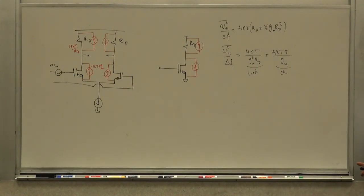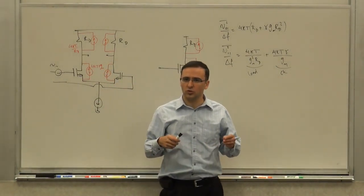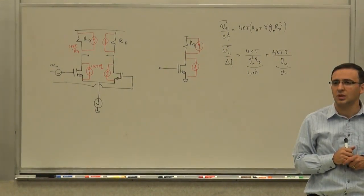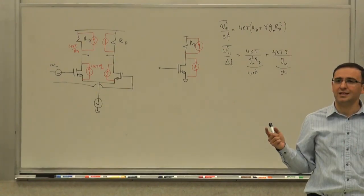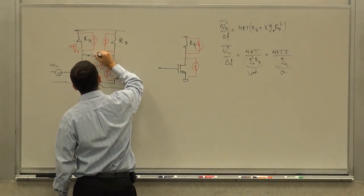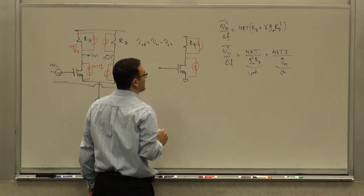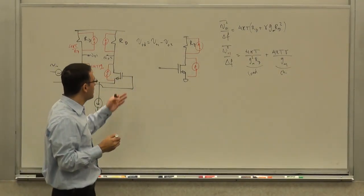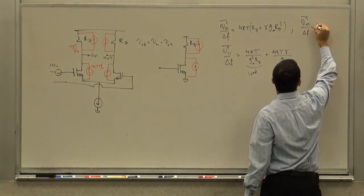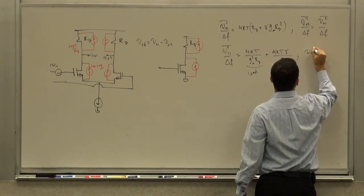Now, what about the differential amplifier? The differential output is V_01 minus V_02. I can do the same analysis for V_02 and find it's exactly the same expression as V_01. So V_02 squared over delta-f equals V_01 squared over delta-f, and the input-referred noise V_i2 is going to be exactly the same.